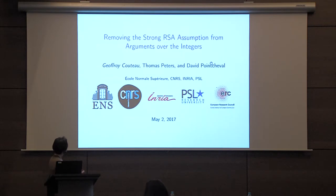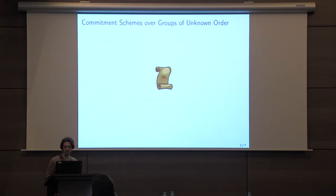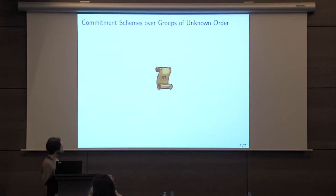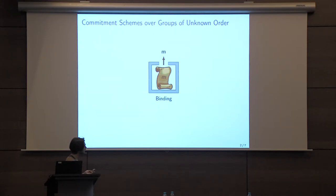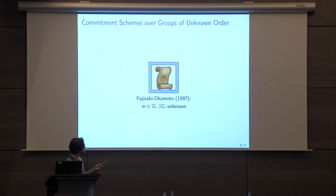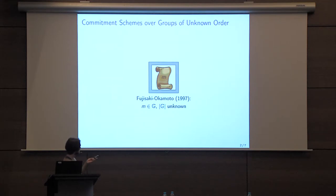You know what a commitment scheme is. There is a sender that has some message. He can lock it into a box and the box hides the message — you cannot see what's inside. But at the same time, when the sender later reveals the message, he cannot change his mind on the message. What we'll look at today is a commitment scheme introduced in 1997 by Fujisaki and Okamoto, which has a nice property: it allows committing to a message M over a group of unknown order.